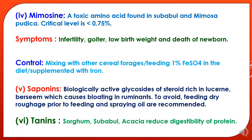The fourth toxic constraint is mimosine, a toxic amino acid found in Subabool and Mimosa pudica. The critical level is less than 0.75%. Symptoms of mimosine toxicity include infertility, goiter disease, low birth weight, and death of newborns. Control measures include mixing with other cereal forages and feeding 1% iron sulfate in the diet or supplementing with iron.